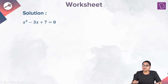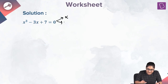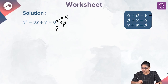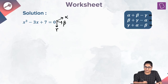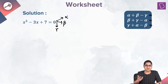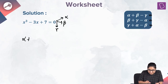This equation has three roots alpha, beta, and gamma. If you closely observe the equation, you will see that there is no term of x square. If there is no term of x square, the sum of the roots taken one at a time will be 0. That means alpha plus beta plus gamma is equal to 0.